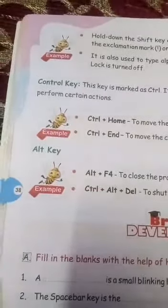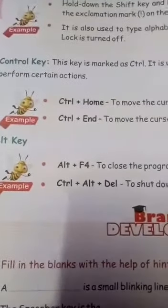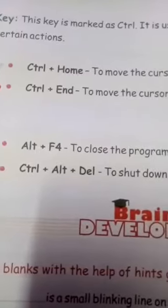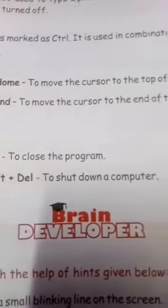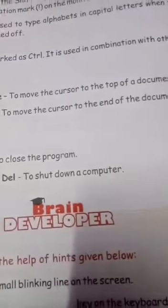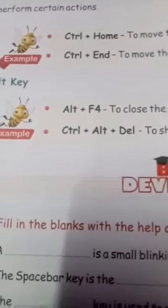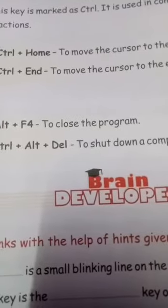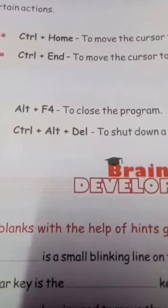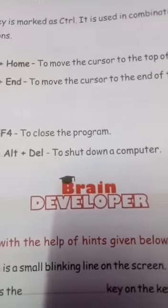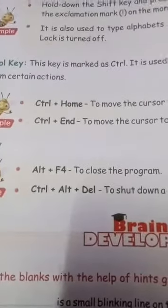Now take out page number 38 — control key. Control key is marked as Ctrl and it is used in combination with other keys to perform certain actions. For example, if we press Ctrl plus Home, it will move the cursor to the top of a document. And if we press Ctrl plus End, it will move the cursor to the end of the document. Next is the Alt key. Alt plus F4 will close the program. If we press Ctrl plus Alt plus Del, it will shut down the computer. So these are the combination keys we have just learned.